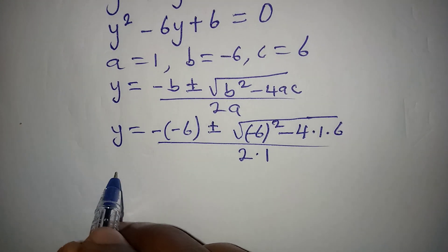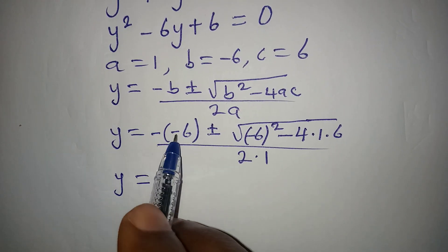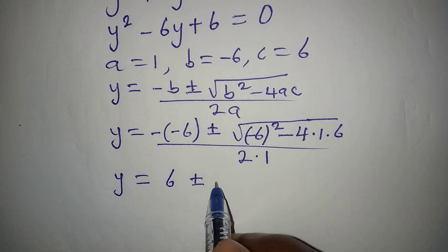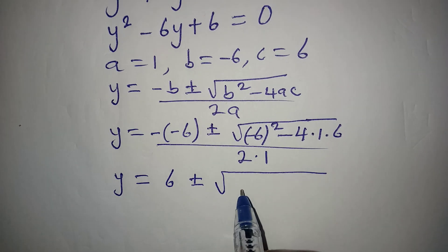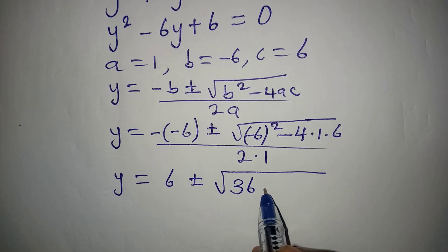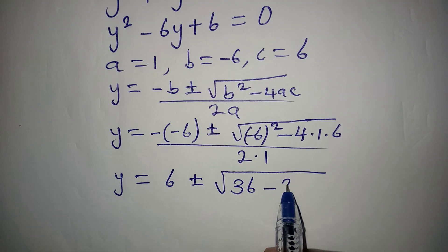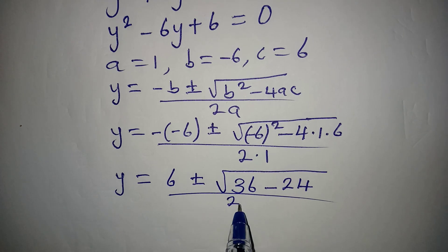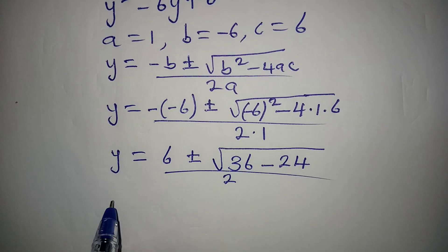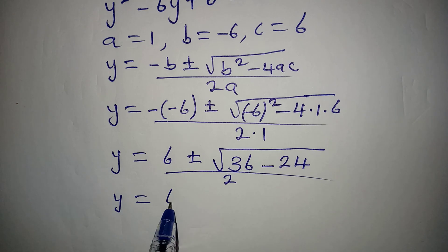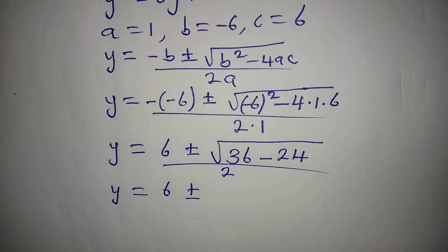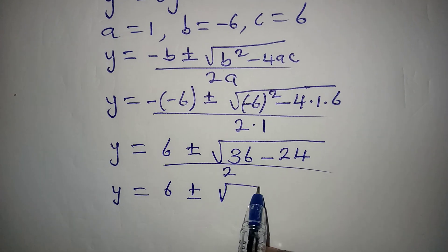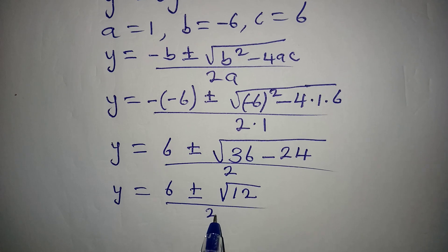Continuing, y equals 6 plus or minus the square root of 36 minus 24, all over 2. Since 36 minus 24 gives 12, we have y equals 6 plus or minus the square root of 12, over 2.